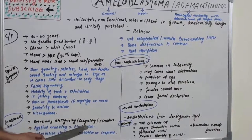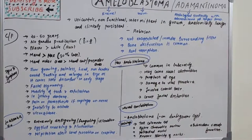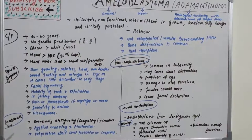If left untreated, ameloblastoma becomes an extremely disfiguring, fungating, and ulcerative mass with eggshell cracking and fluctuation. Crepitus or hard sensation on palpation is also present. It is not an encapsulated tumor — it invades surrounding tissue, causing bone destruction and root resorption as common features.